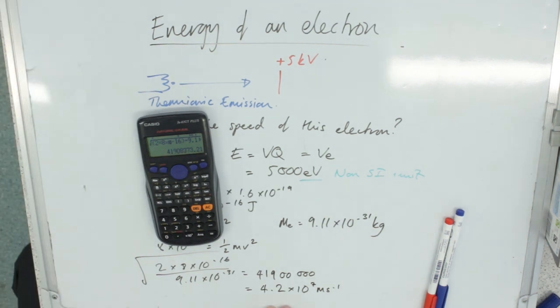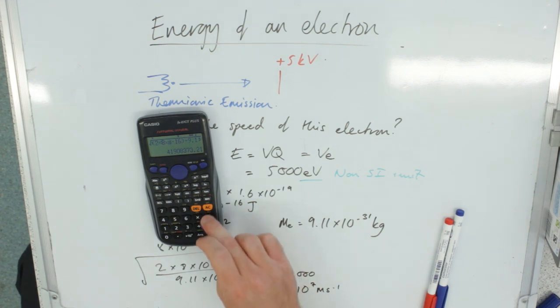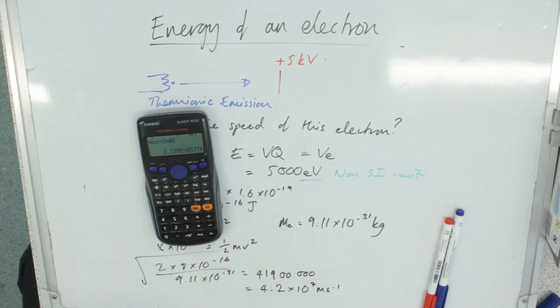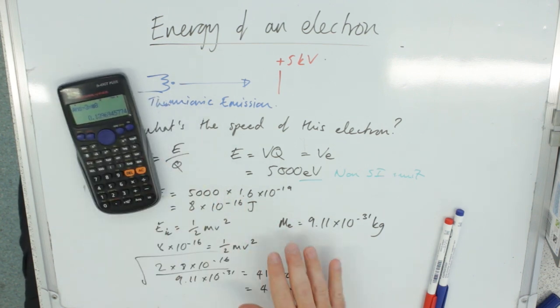So that's the speed of the electron after it's got to this point. Interesting side note, what's that as a fraction of the speed of light? It's about 14%. We're not really expecting to encounter relativistic effects until about 0.7 of the speed of light, so we're okay to be using normal rest mass at this kind of point.